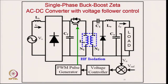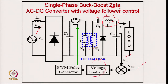The single-phase buck-boost Zeta converter with voltage follower approach can be designed with discontinuous magnetizing inductance, output inductor, or capacitor voltage. We normally prefer output inductor discontinuous, which allows use of the voltage follower approach for output voltage control. Inherently, power factor correction on the input supply is achieved by design. The control uses reference voltage, feedback, voltage controller, and compares with a sawtooth to give PWM pulses to the device.